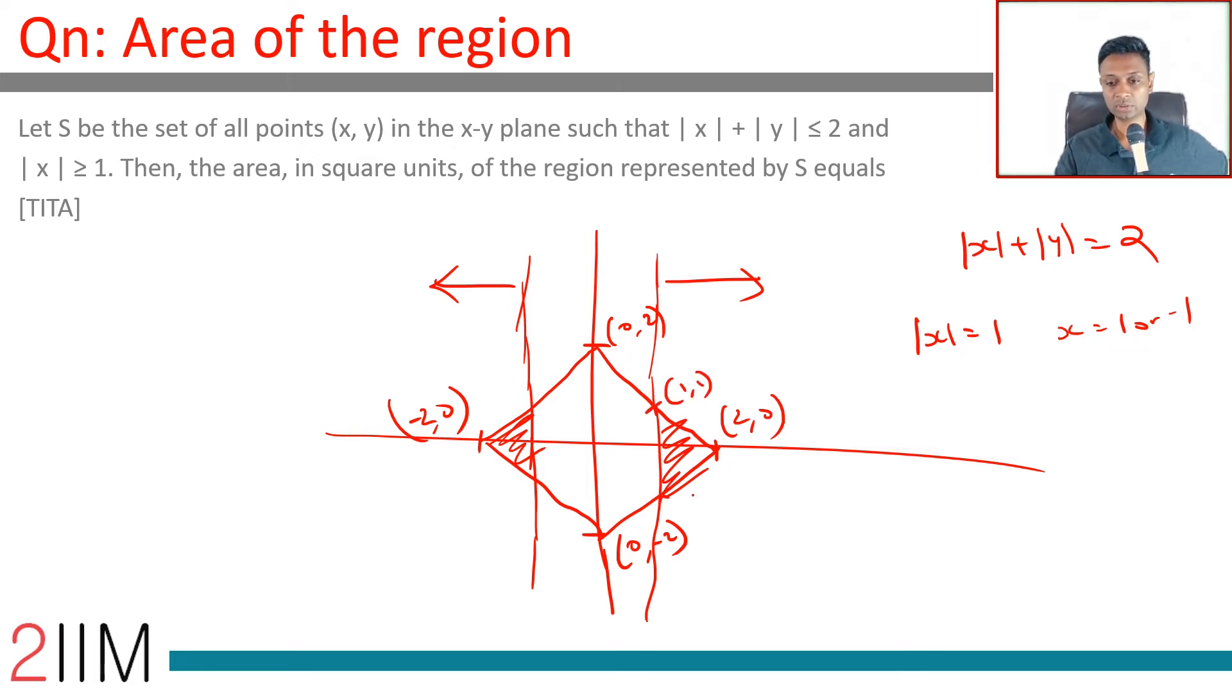This point will be (1,1), this will be (1,-1), (-1,1), (-1,-1). This region. Find one area, we can find the other. This distance is 2, height is 1.